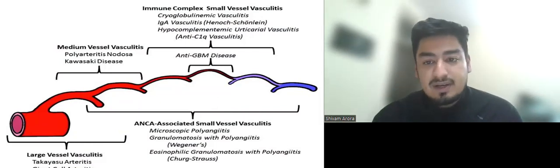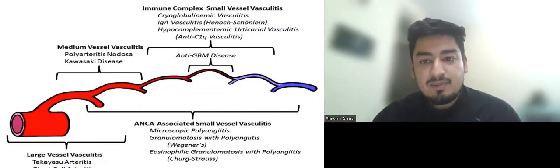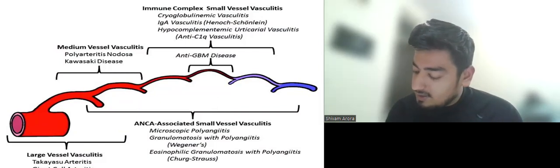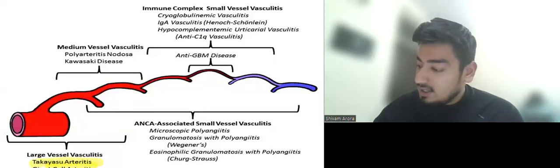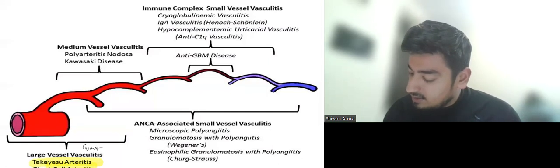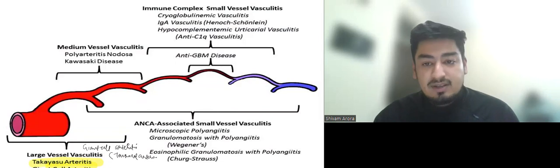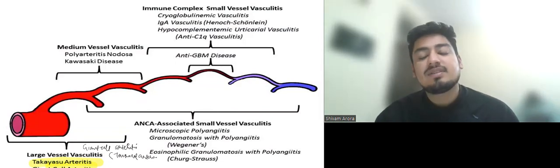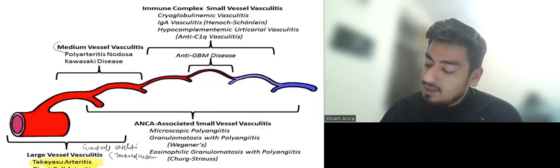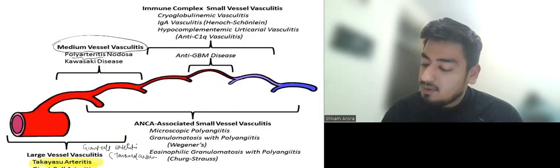So first of all vasculitis are divided into large vessel, medium vessel and small vessel vasculitis. In large vessel vasculitis we have Takayasu Arteritis and Giant Cell Arteritis which is also known as Temporal Arteritis. Then we have medium vessel vasculitis like Polyarteritis Nodosa and Kawasaki disease.